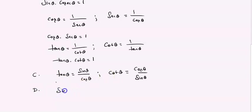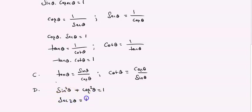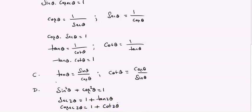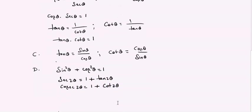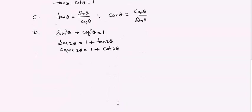The square relations: sin squared theta plus cos squared theta equals 1. Similarly, secant squared theta equals 1 plus tan squared theta. And cosecant squared theta equals 1 plus cot squared theta. These are the square relations you should know.